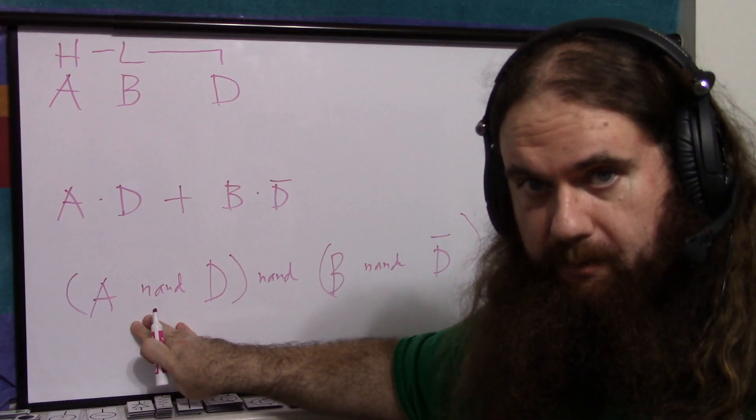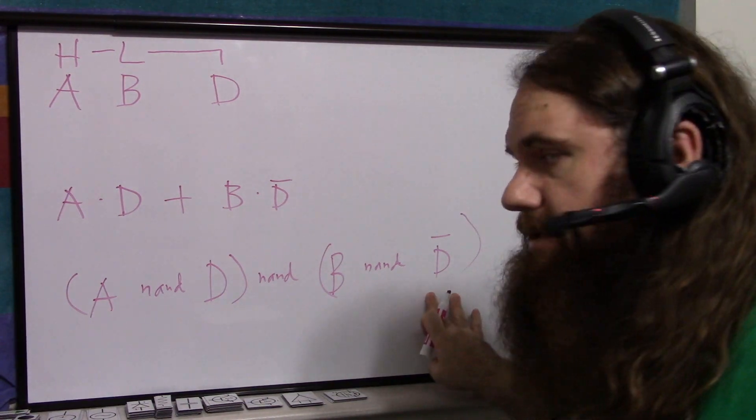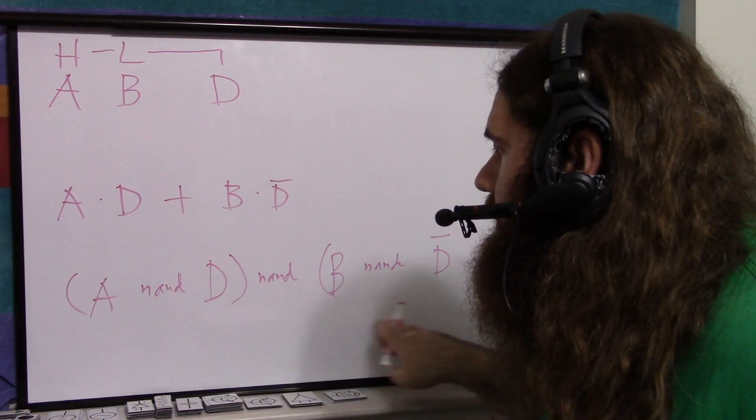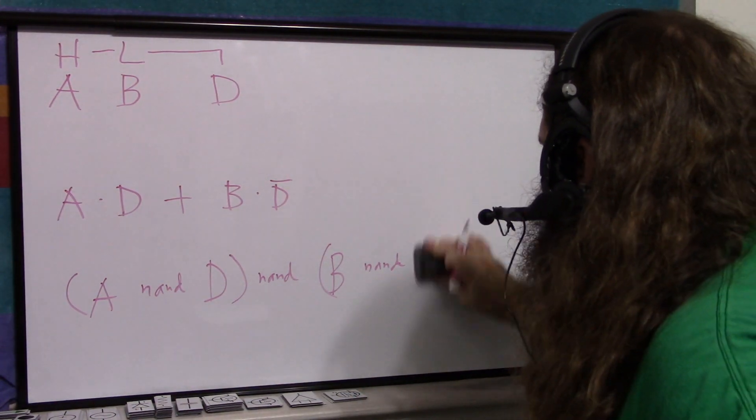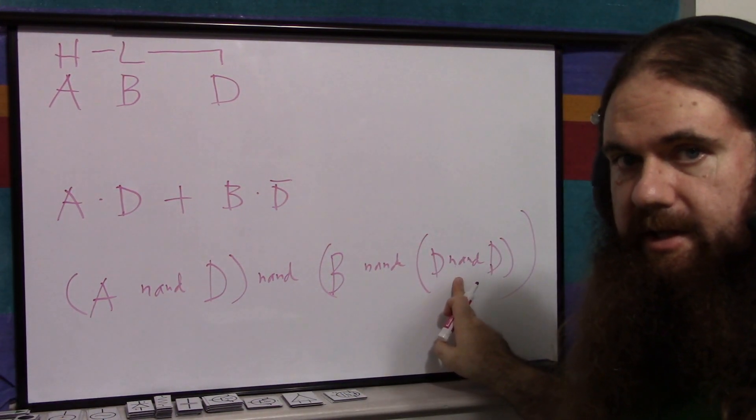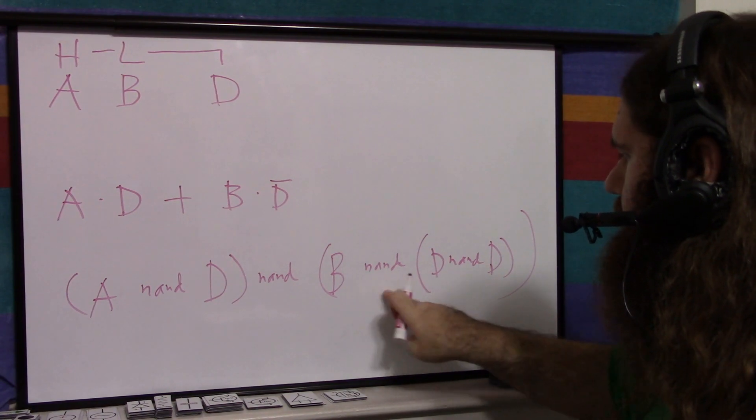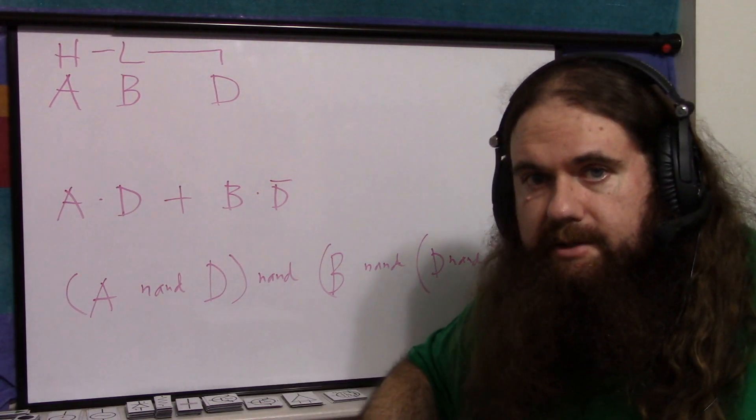So A NAND D, that's one gate. B NAND NOT D, that's two gates. And then both of those together, NAND, is your third gate. To get D NOT, we can just do D NAND D. So one, two, three, four gates, one chip.